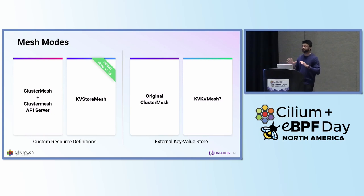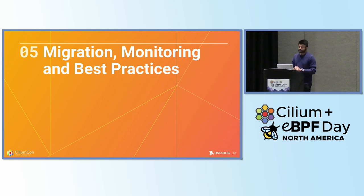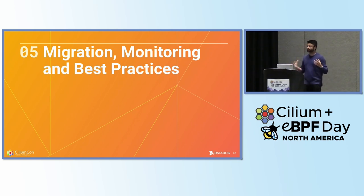To summarize the cluster mesh modes: it really comes down to what kind of identity allocation mode you're using. If you're using CRD, you have two options. If you're using dedicated etcd, you also have two options. Over the course of the last six months, we've been migrating and meshing together some of our large clusters, and we've learned some lessons while doing so.